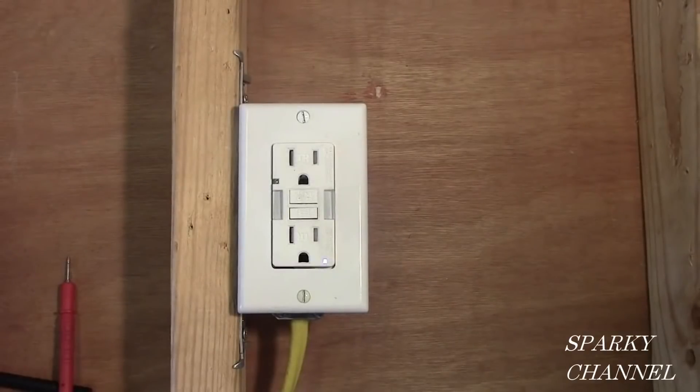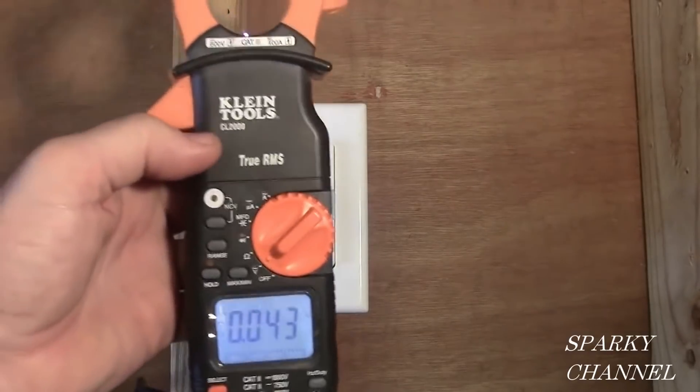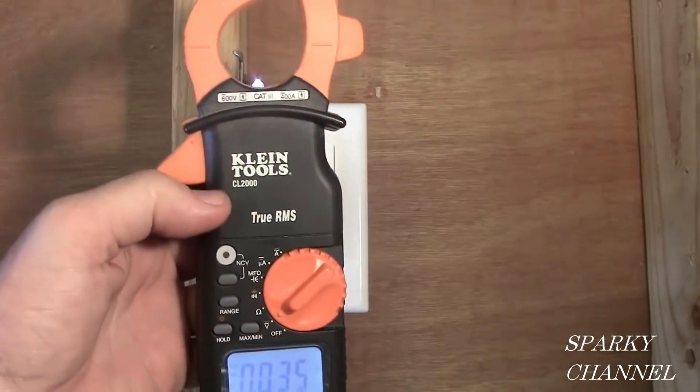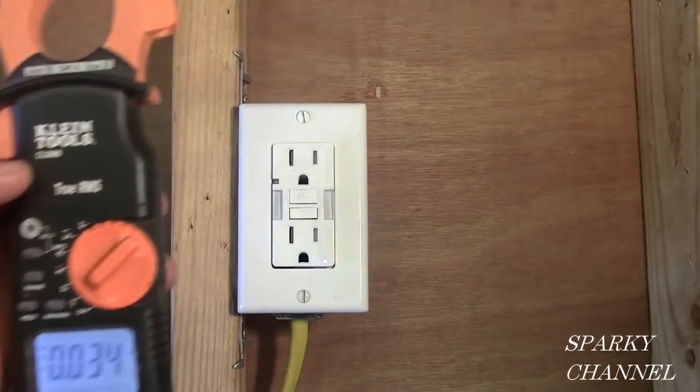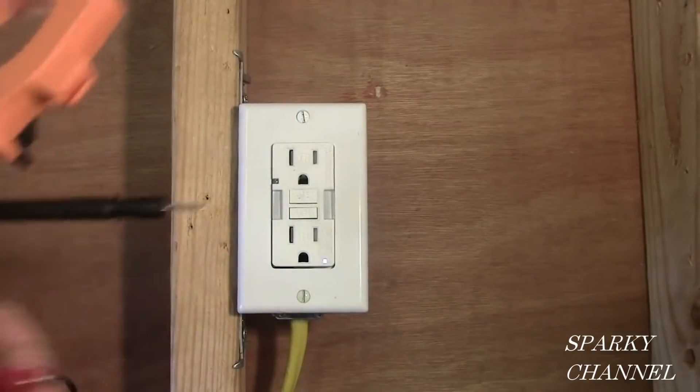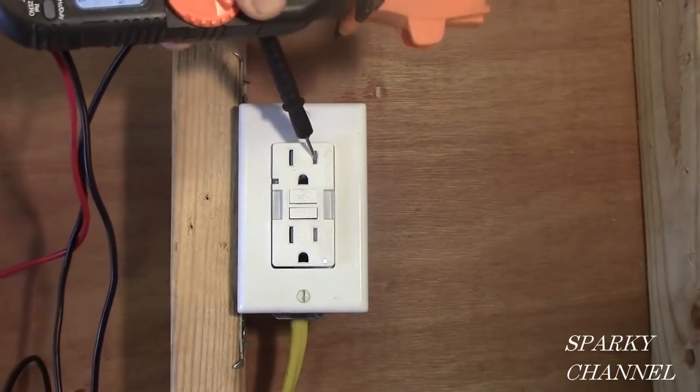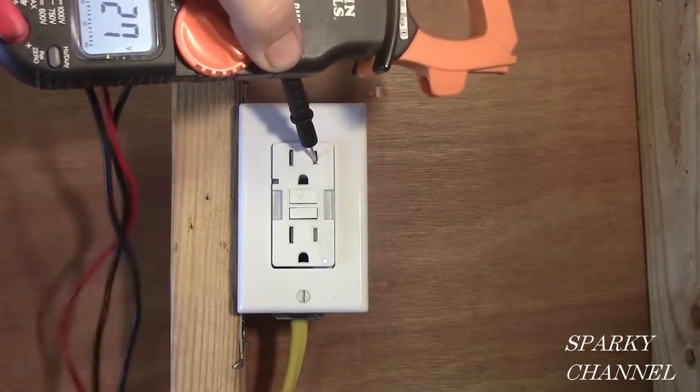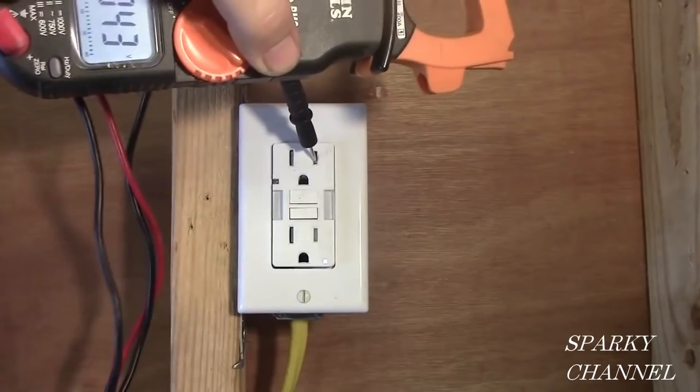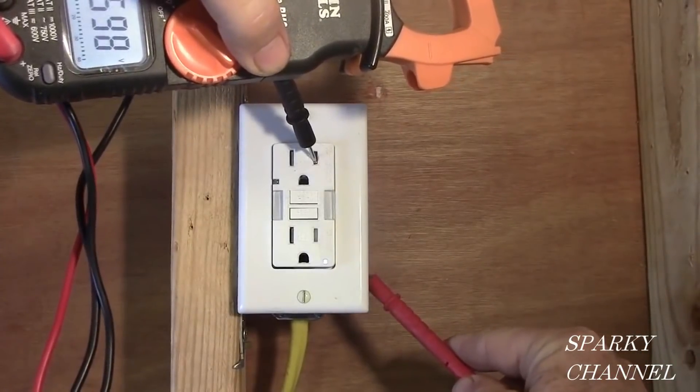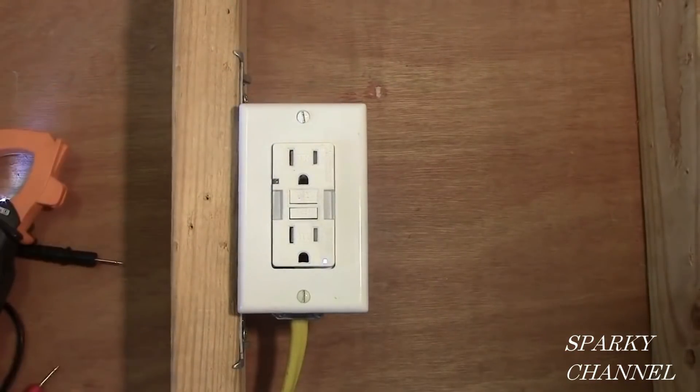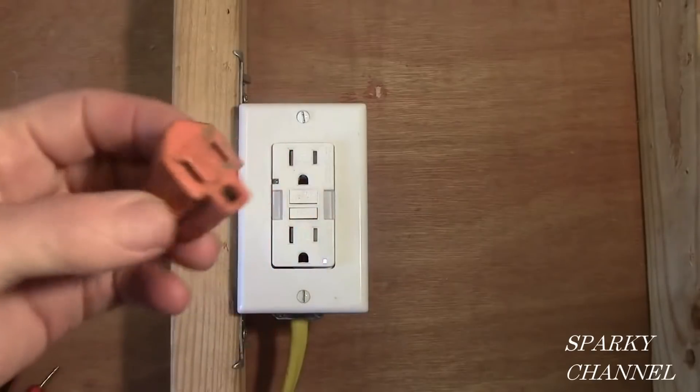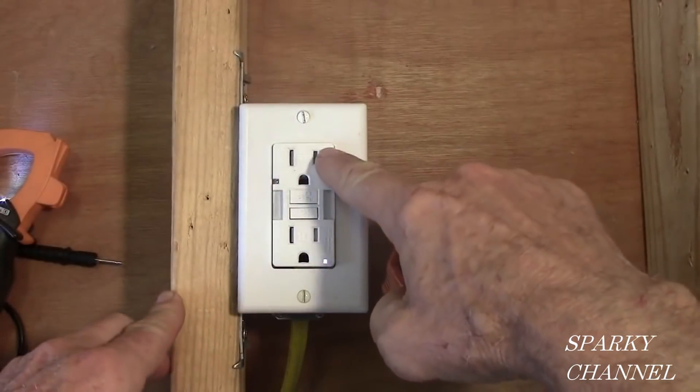For the next test, I'm going to test the bonding of the box itself. Remember, we just used a self-grounding clip to do the bonding. For the test, I'm going to be using my Klein CL2000 True RMS Voltage Meter. Normally you could just put one lead into the positive portion of the receptacle and one on the box, but the problem is this is a tamper-resistant receptacle. So I'm going to use an adapter. Remember, the positive side is right here - it's the short side.